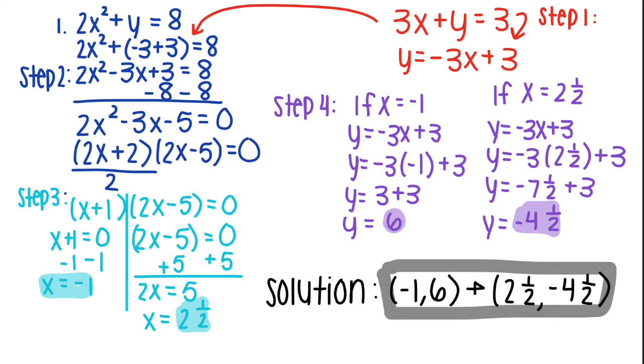Now that you're in step 3, you have two different parts to solve: x plus 1 equals 0 and 2x minus 5 equals 0. For x plus 1 equals 0, you get x equals negative 1. For 2x minus 5 equals 0, you get x equals 2 and a half.